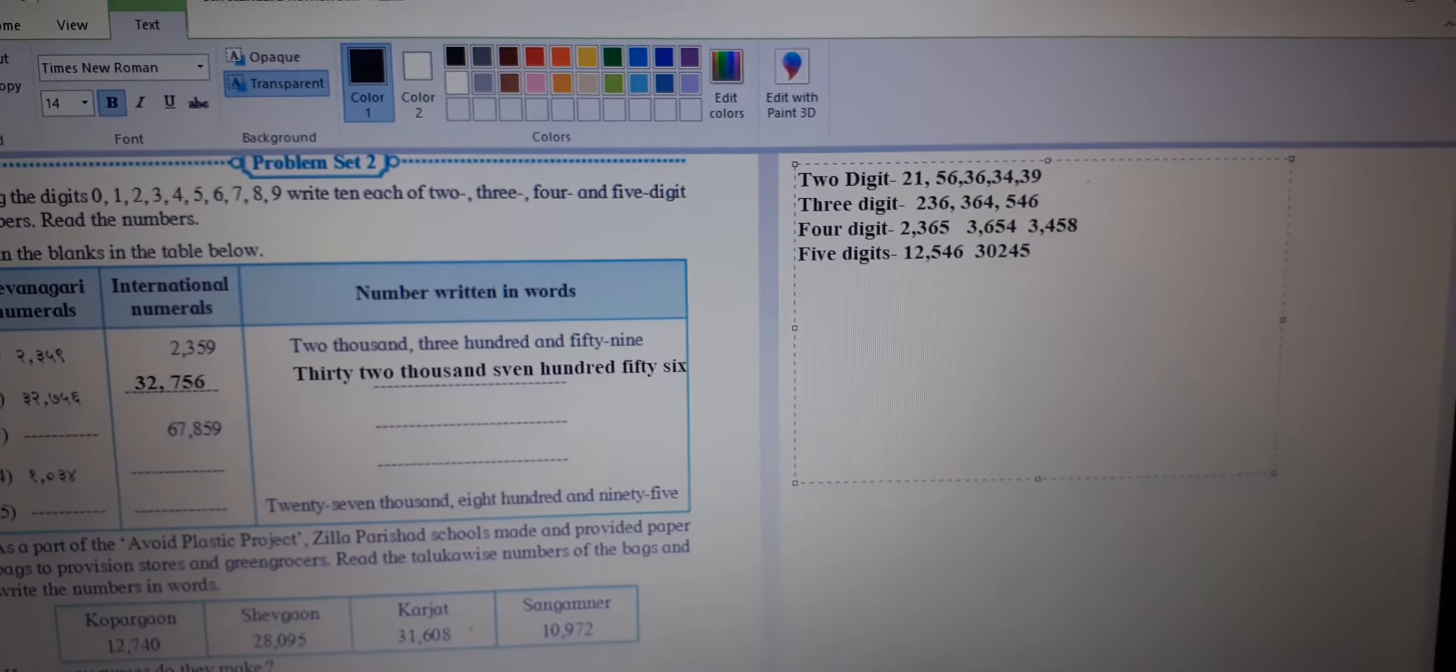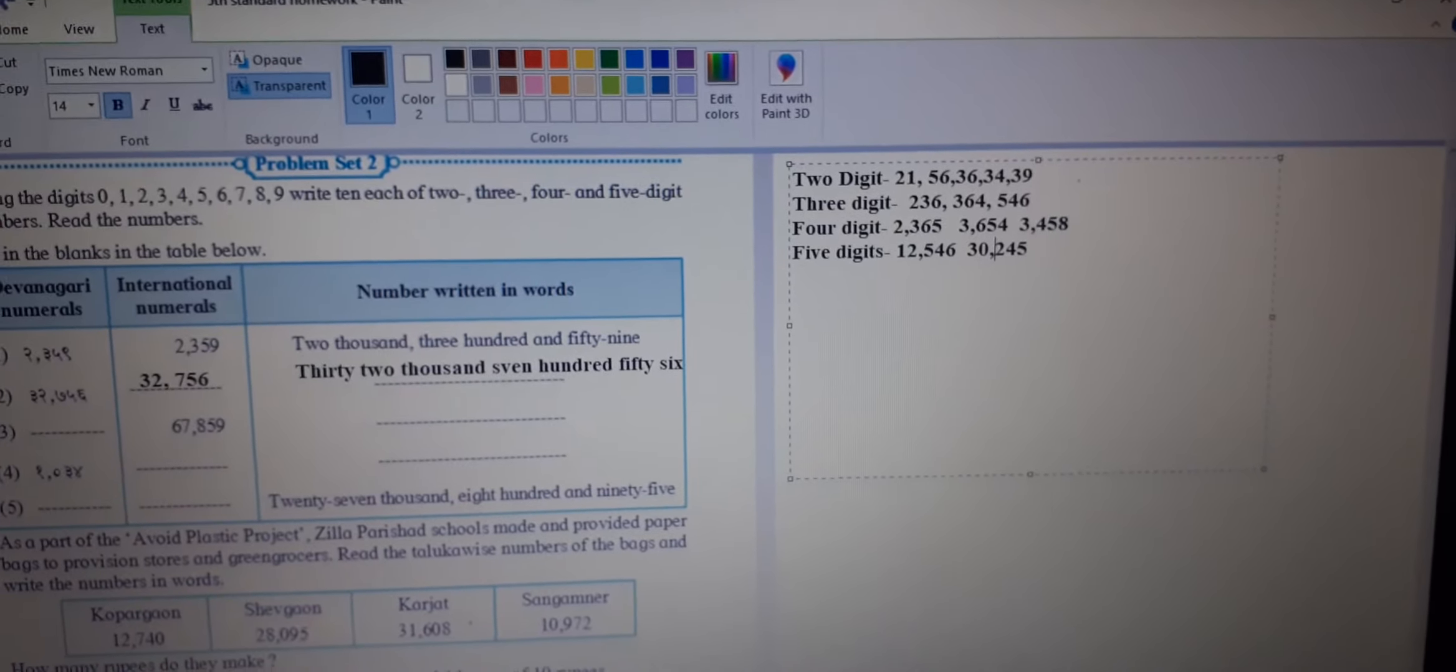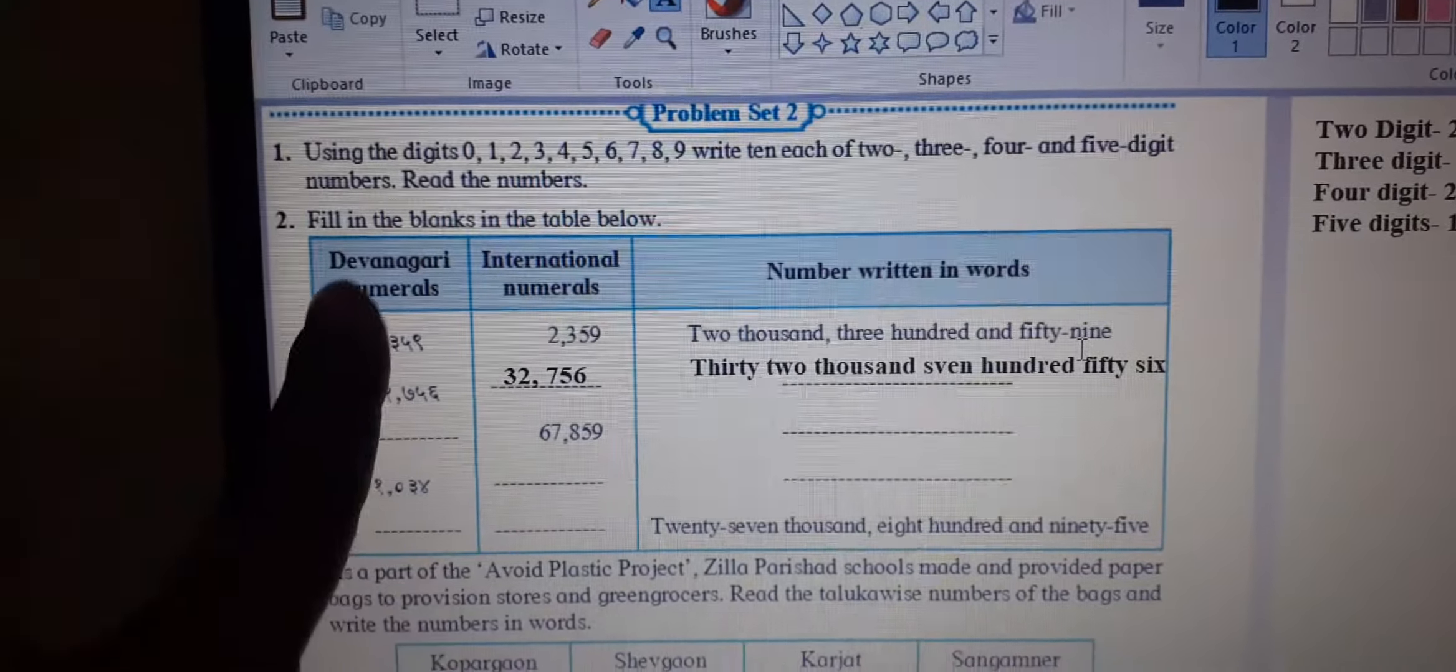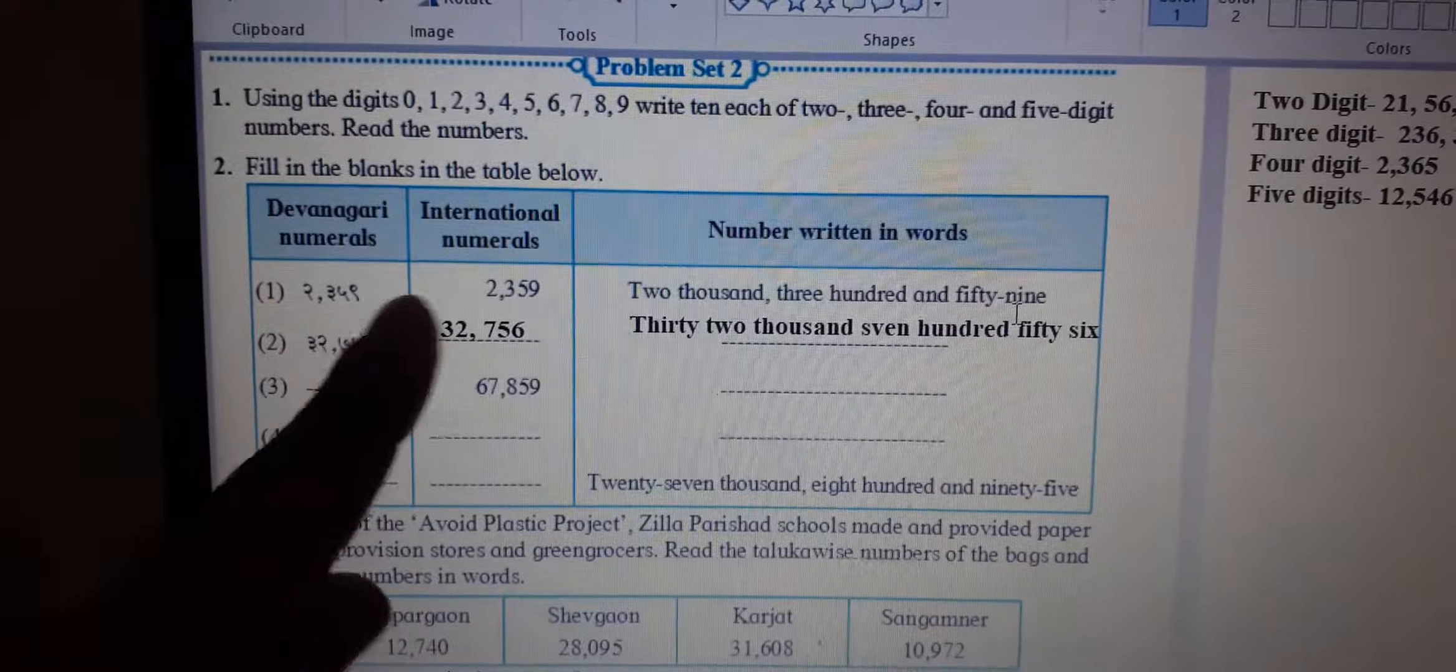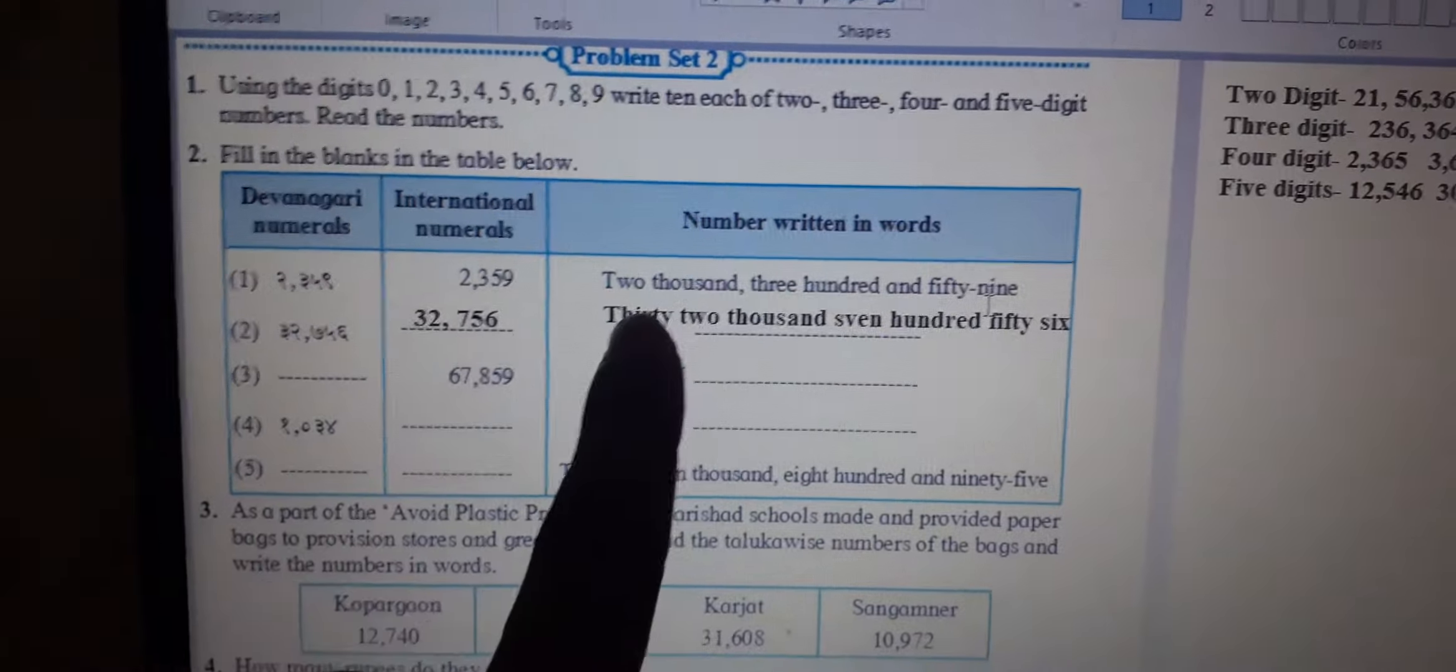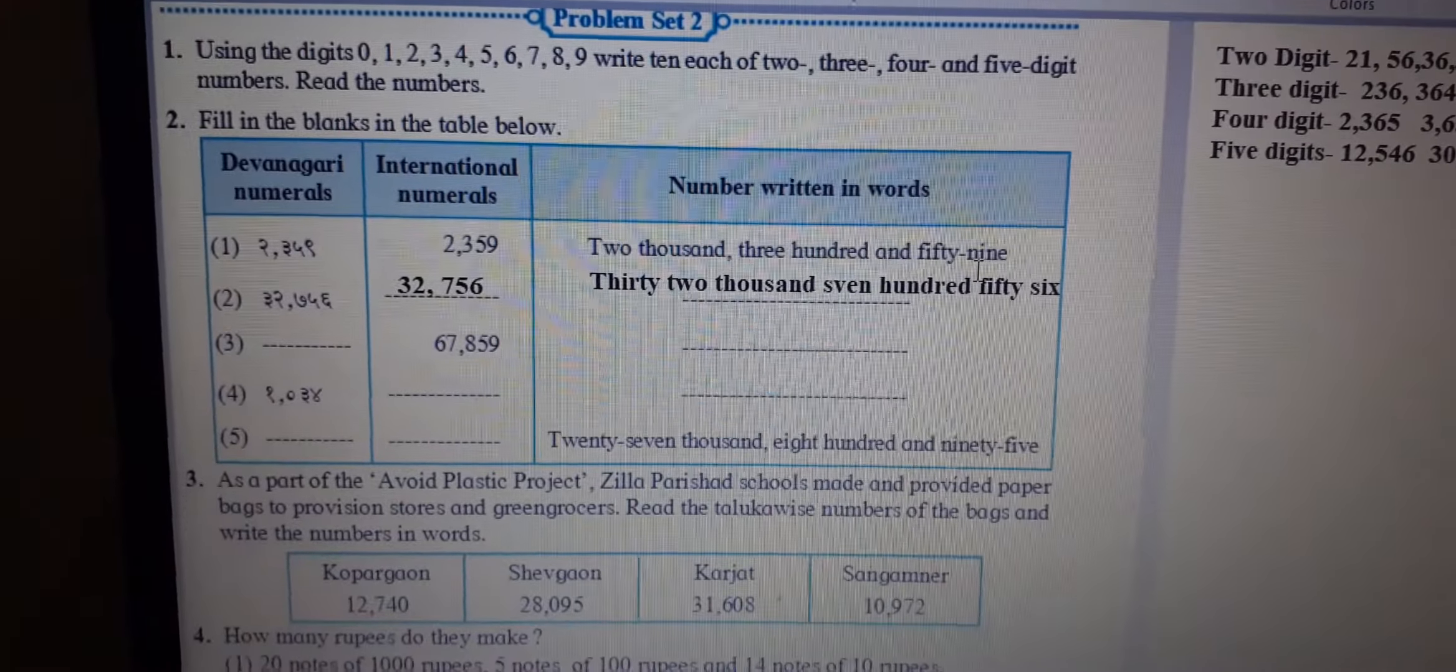Is this clear? Fill in the blanks in the table below - There were Hindi numbers in the international number, English number and spelling. The first question and the second question is solved. The first question is 2359. In English, there are 2359 numbers. Now, how can we read it? 2359. The second question is 32756. In Hindi, it is written in English. And in 32756, it is written in English.